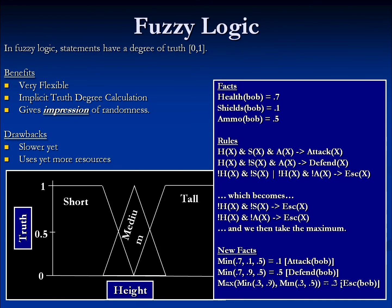For the escape rules, generated by splitting the OR, we calculate NOT health first. If his health is 0.7, NOT health is 0.3. We've already calculated NOT shields to be 0.9. The minimum of 0.3 and 0.9 is 0.3, so the first calculation for Bob's escape tendency is 0.3. For the second escape rule, NOT health is still 0.3, and NOT ammo is 1 minus 0.5, which is 0.5. The minimum of 0.3 and 0.5 is 0.3, giving us our second escape tendency value of 0.3. Since we have multiple values for the same tendency, we take the maximum to represent the OR — in this case both are 0.3, so Bob's escape tendency is 0.3. Looking at these results, Bob's highest tendency would be to defend at 0.5, though there are many ways to interpret this data, which we will look at moving forward.